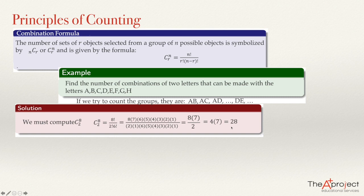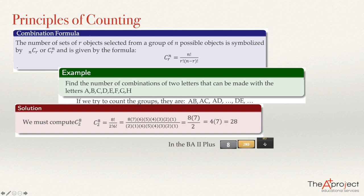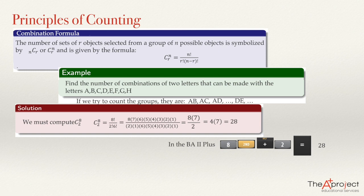If we want to do that on the calculator, almost every calculator has a key for combinations. On the BA2+, you enter 8, then press the second function key followed by the NCR key — which is on the same key as the plus sign. Then enter 2 and press the equal sign, and the calculator immediately shows you the answer: 28.